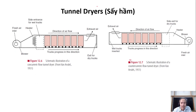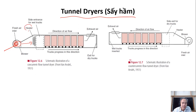Now we go to the next design — the same technology but a more complicated design. This is called tunnel dryers. The fresh air comes in, and this is the fan, the blower, to blow the air through the heater to heat it up. Then the air moves in this direction, and the food moves on the trolleys in this direction.